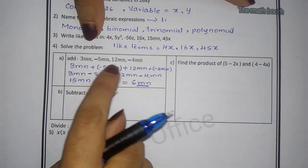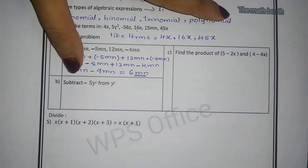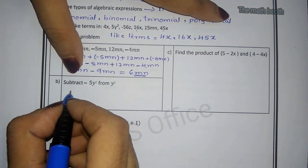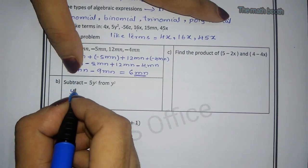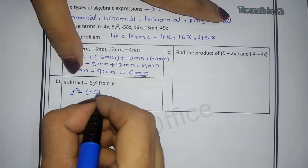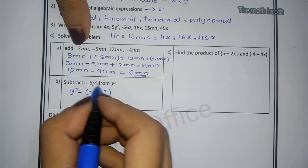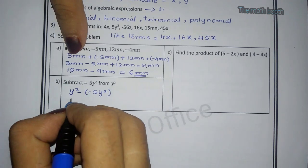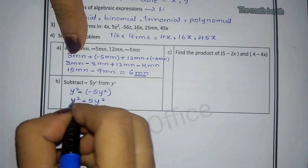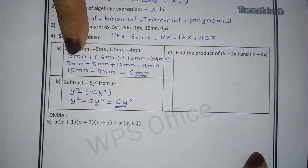Let us see now, second one. Subtract minus 5y square from y square. After from, whatever number comes we should write first. Y square, from means subtract, minus minus 5y square. From y square we have to remove minus 5y square. So y square minus minus is plus 5y square. 5y square plus y square is 6y square, is the answer.